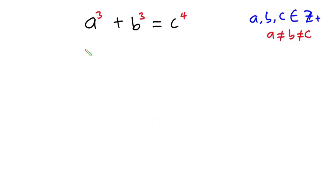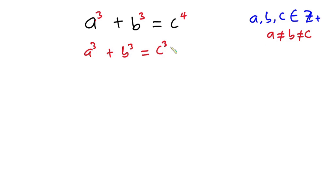We have a to the third power plus b to the third power is equal to c to the fourth power, which could be written as c to the third power times c.